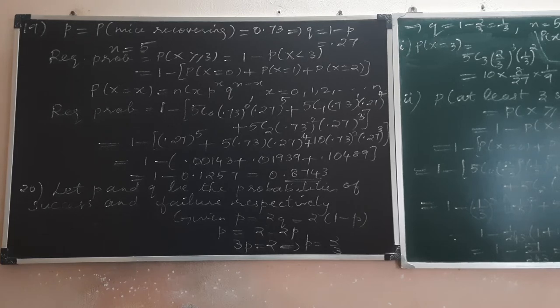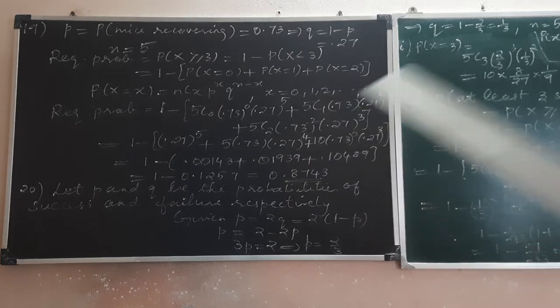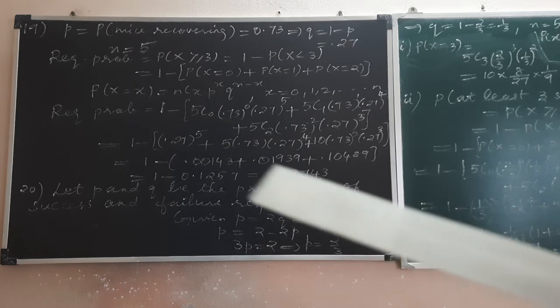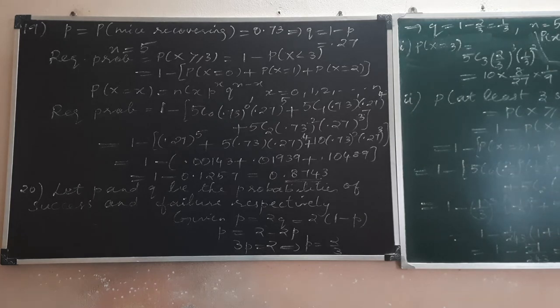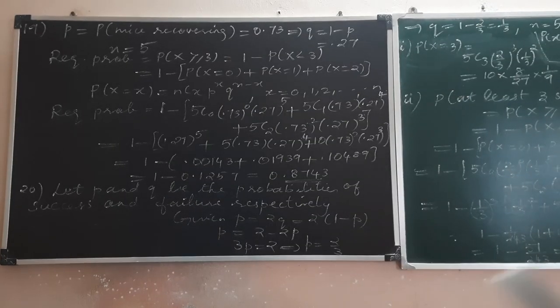We can find P of X greater than or equal to 3, which is 1 minus P of X less than 3. This is simpler and we will be able to do this. It is a binomial distribution, so the probability mass function P of X is equal to NCX P power X Q power N minus X, X taking value 0, 1 to N.